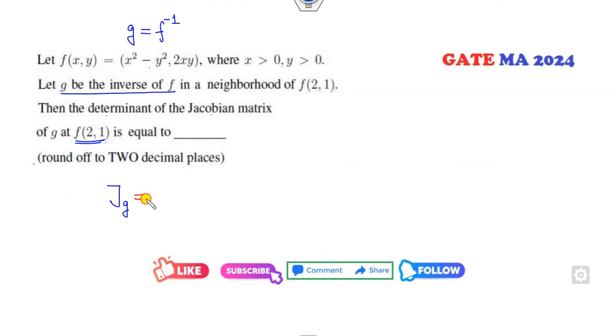The other way, the simplest way, the shortcut trick is: I can find the Jacobian of F at the point G. So what is G? G is the inverse of F and you have to find this value. So I assume A, B is my F of 2, 1.